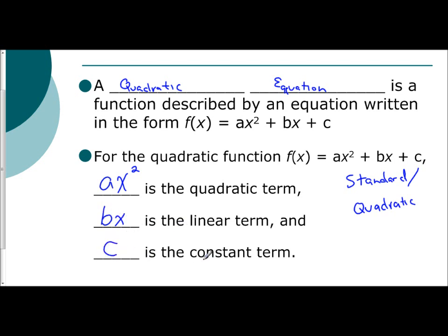And c is the constant. Remember constant is just a number with no variable attached to it. So in the standard form or quadratic form, our equations must be written at first our quadratic term, then our linear term, and then our constant. Your exponents are in decreasing order from left to right.